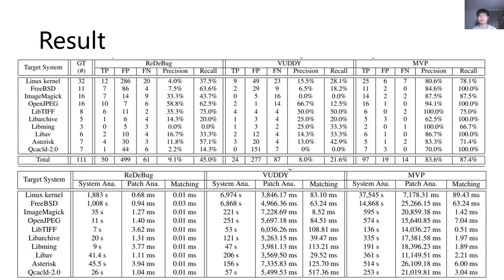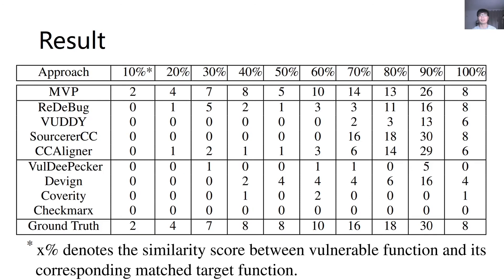To evaluate the scalability of MVP, we compared it against ReDeBug and VUDDY. In summary, MVP is slower than ReDeBug and VUDDY, but it still scales to large systems. We also measure the similarity score between the target functions detected as truly vulnerable by all approaches and their matched vulnerable functions. The results show that MVP can detect recurring vulnerabilities regardless of whether the target function T is similar or not similar to the vulnerable function V, while other approaches tend to find recurring vulnerabilities only when T is similar to V.